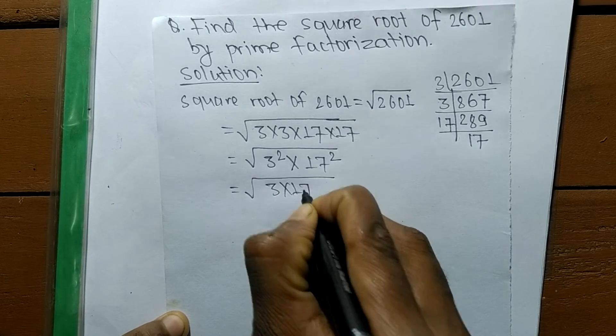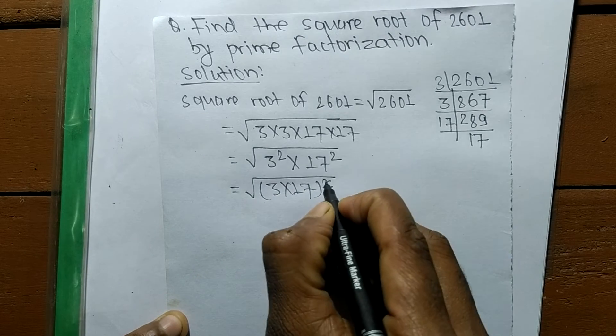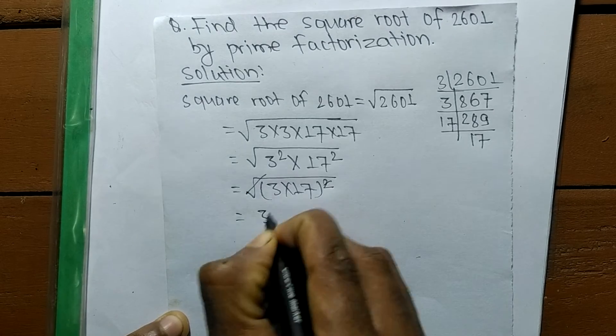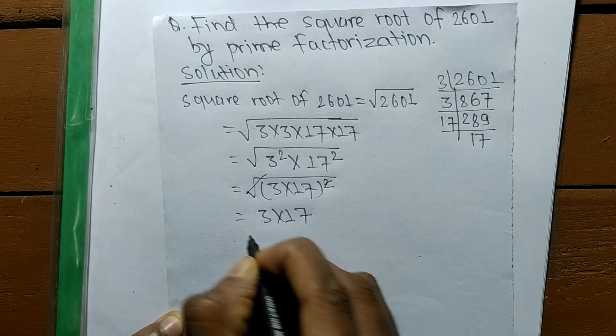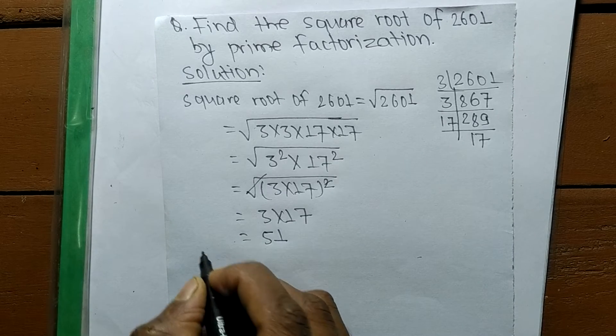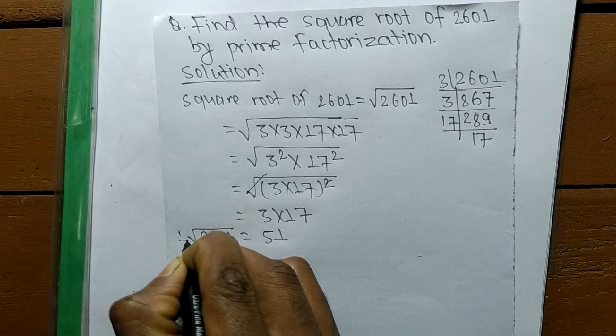So 3 and 17 both contain a square, so we can easily write it 3 into 17 whole square. Now a square and a square root cancel each other, so 3 into 17 comes out. So it is equal to 51. So the square root of 2601 is equal to 51.